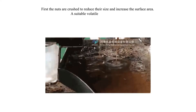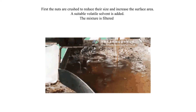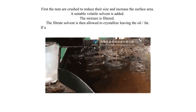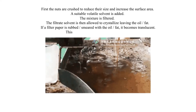A suitable volatile solvent is added. The mixture is filtered. The filtrate solvent is then allowed to evaporate, leaving the oil or fat. If a filter paper is rubbed or smeared with the oil or fat, it becomes translucent. This is the test for the presence of oil or fat.